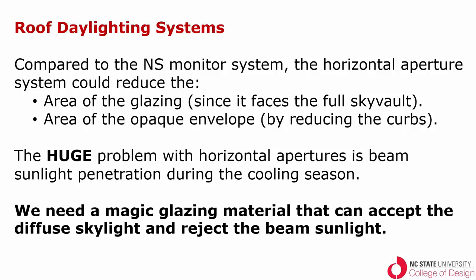Which brings us back longingly to horizontal apertures, which, we've said, can collect light from the entire sky vault. So the area of the glazing is reduced if we can go to horizontal, and the area of the opaque envelope in the form of curbs can be reduced. The huge problem with horizontal apertures is beam sunlight penetrating during the cooling season. Beam sunlight can be a problem all year long from a glare point of view, but from a thermal and an energy point of view, it's hugely challenging during the cooling season. What we need is a magic glazing material that can accept the diffuse light from the sky and reject the beam sunlight. If we can do that, we no longer have the need for any kind of rapid aperture control. This material doesn't move from second to second or minute to minute. It just works.